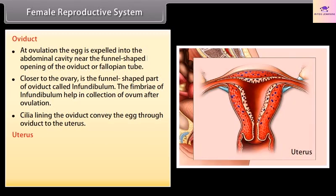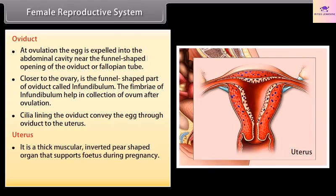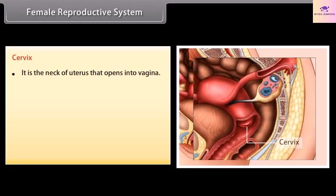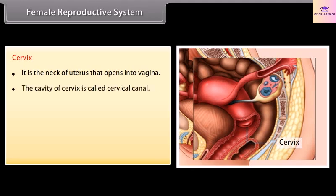The uterus is a thick muscular inverted pear-shaped organ that supports the fetus during pregnancy. It has three layers of tissue: perimetrium, myometrium, and endometrium. The cervix is the neck of the uterus that opens into the vagina, and the cavity of the cervix is called the cervical canal.